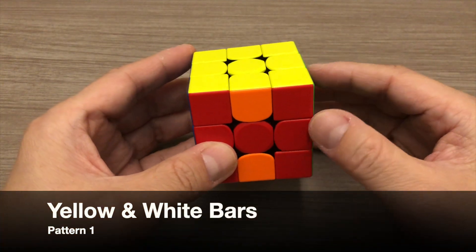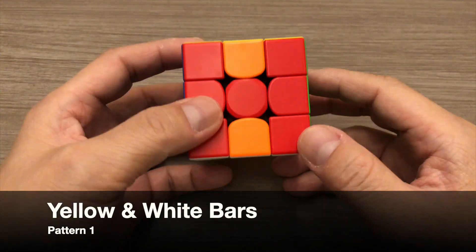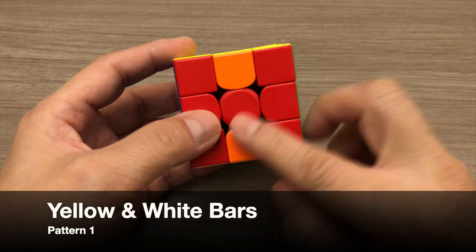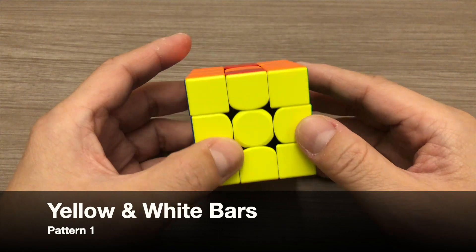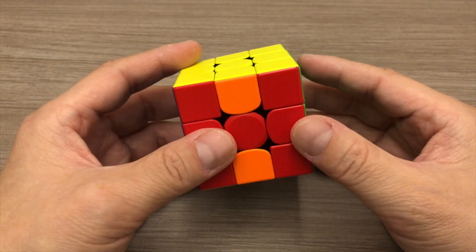The first pattern is one with the yellow and white bars. And there is also a defined pattern on the red and orange faces of the cube. For this pattern, we will apply the following algorithm to solve the cube.